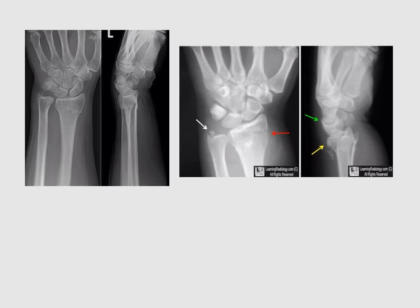On x-ray, we are able to see a transverse fracture of the distal part of the radius. Sometimes the patient also comes with a styloid process displacement.